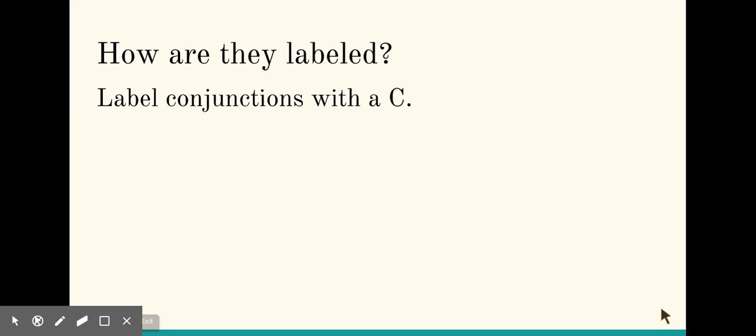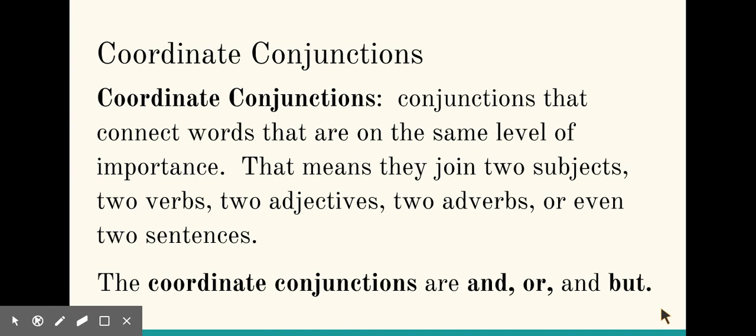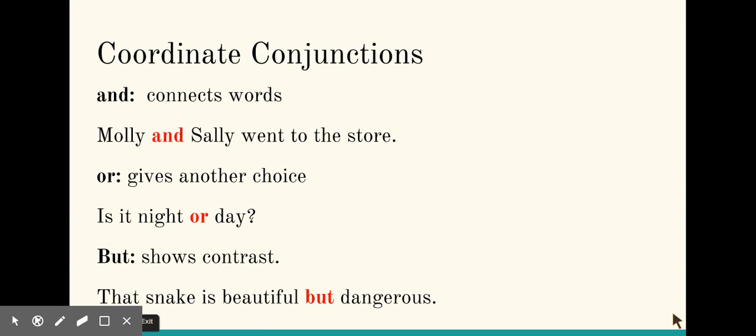How are they labeled? We label conjunctions with a C. A type of conjunction is the coordinate conjunction. Coordinate conjunctions are conjunctions that connect words that are on the same level of importance. That means they join two subjects, two verbs, two adjectives, two adverbs, or even two sentences. The coordinate conjunctions are and, or, and but.